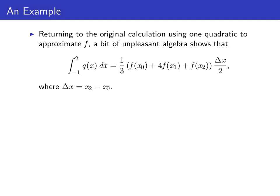Now let's go back and examine this situation using that one quadratic approximation we saw earlier. If we were to do some algebra, which we're not going to do here, we would see that if we integrated from -1 to 2 that quadratic q(x) dx, we'd end up with the expression (1/3)(f(x₀) + 4f(x₁) + f(x₂))(Δx/2), where Δx = x₂ - x₀.